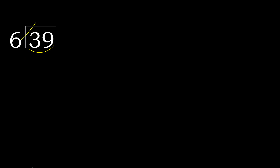6 multiplied by which number is nearest to 39 but not greater? 6 multiplied by 7 is 42, which is greater. 6 multiplied by 6 is 36, which is not greater. 39 minus 36 is 3.